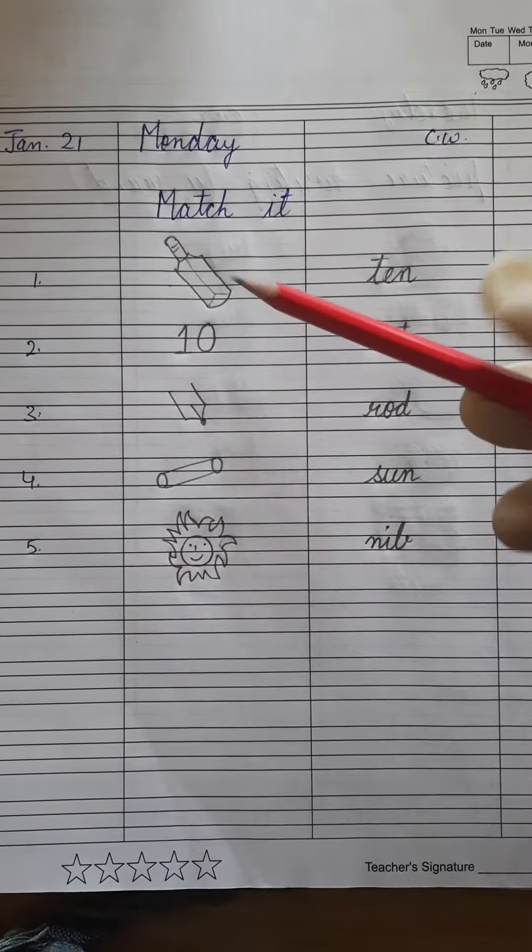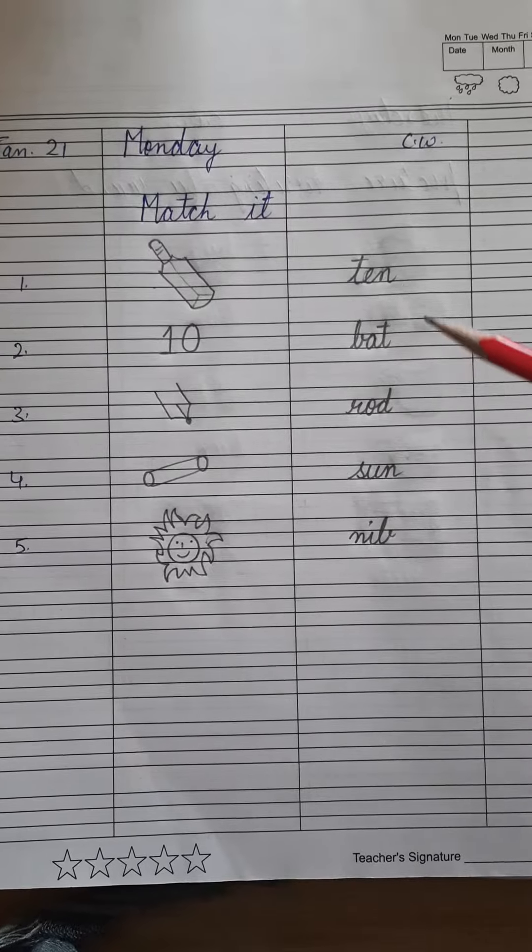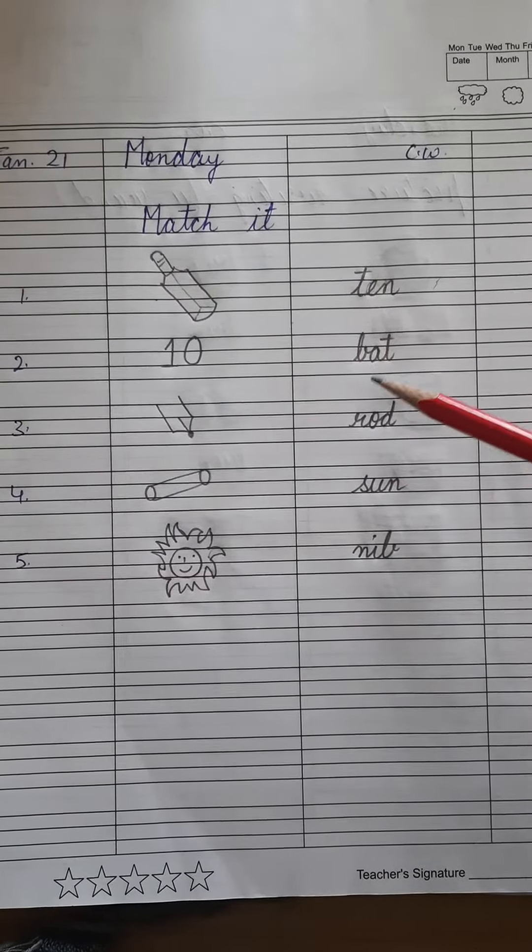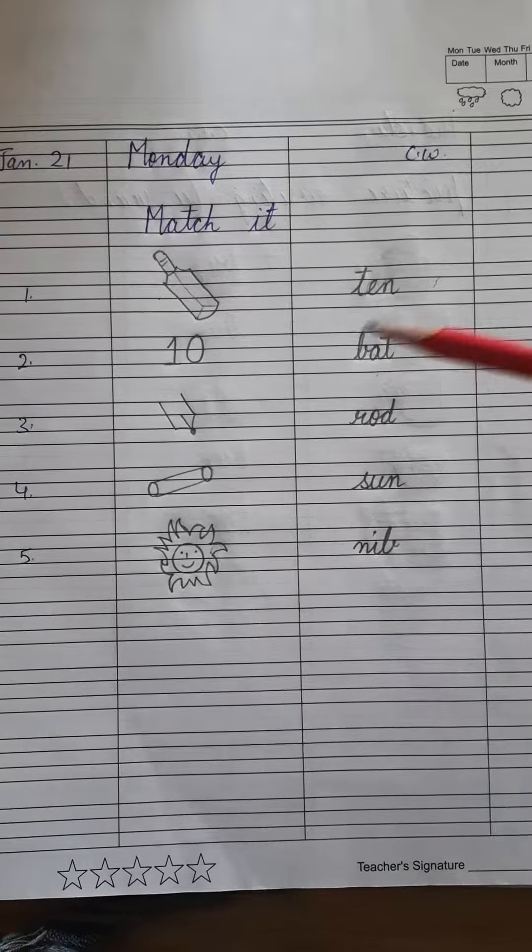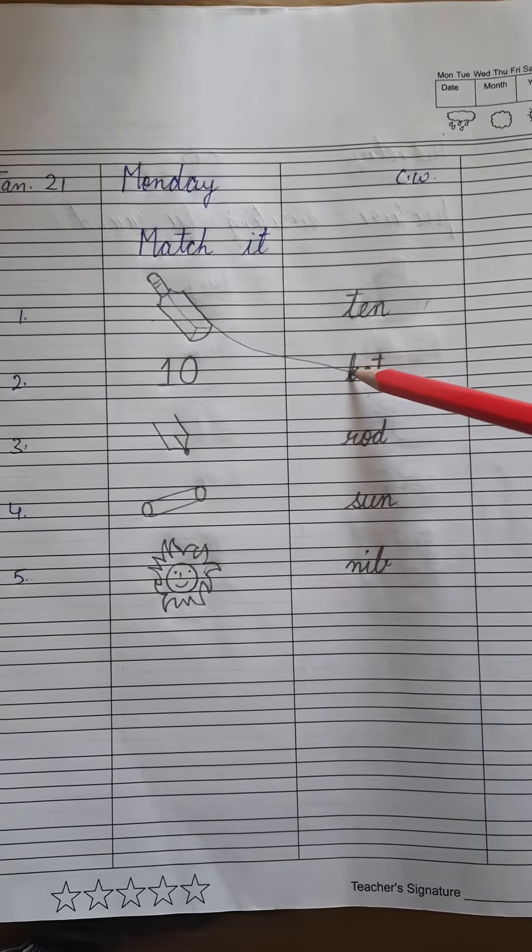Which picture is this? This is a picture of a bat. And where is the word bat? This one? No, no. This one? B-A-T, bat. So match it with this word. Bat. Okay?